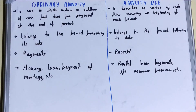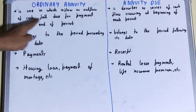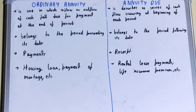Hello friends, in this video I will be helping you with the difference between ordinary annuity and annuity due. So let's start. If we talk about the meaning, then ordinary annuity is one in which inflow and outflow of cash fall due for payment at the end of the period. So once the period is finished, then the due happens for the payment.